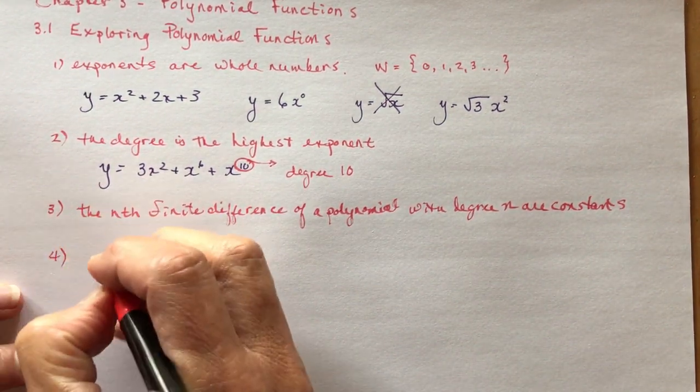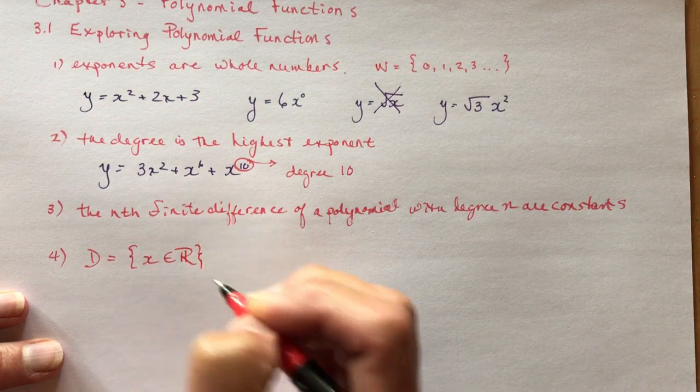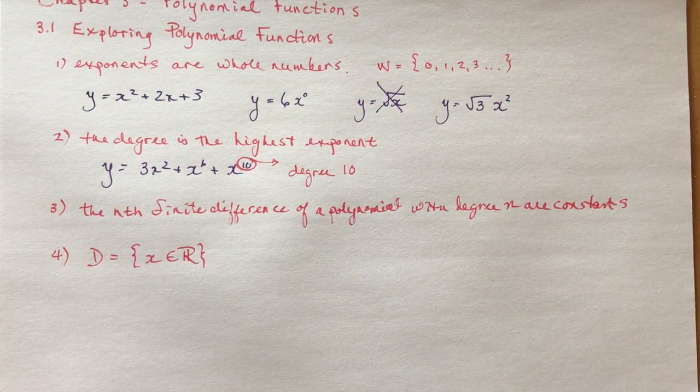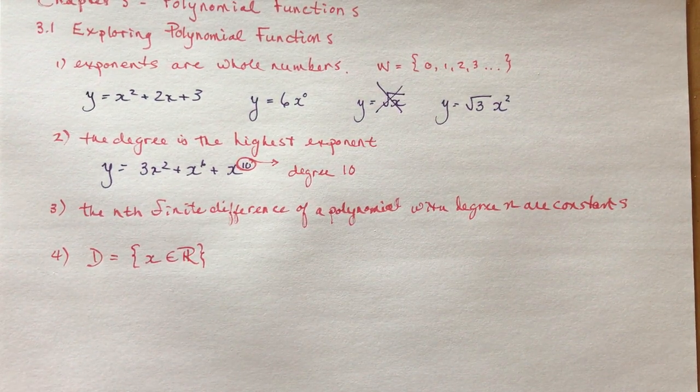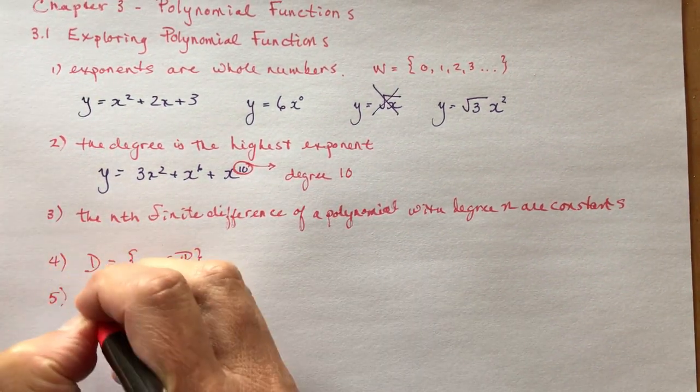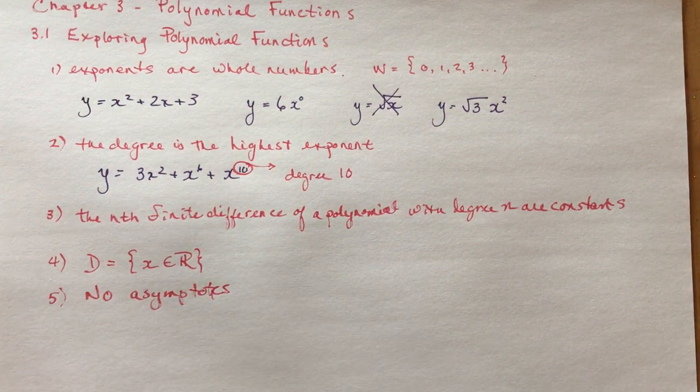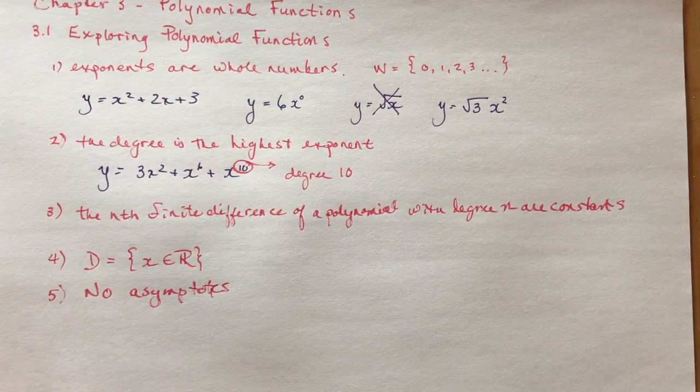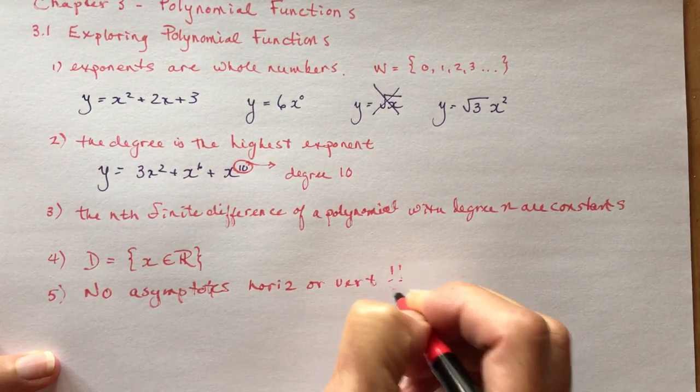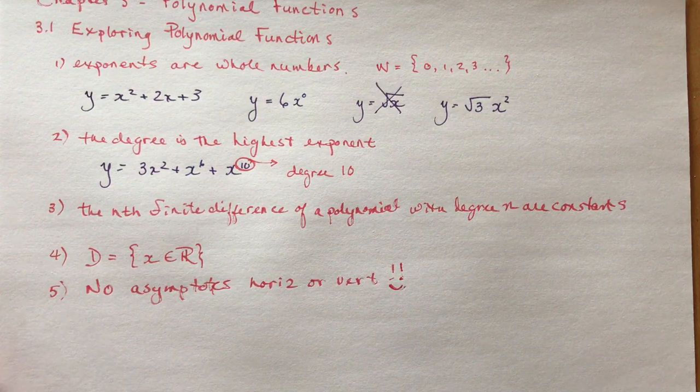The fourth thing you need to know is that the domain is x is an element of real numbers. What does that mean? It means that you can plug in anything, any value of x and get an answer for your function. There's no restrictions. That means there's no asymptotes. No horizontal or vertical asymptotes. That makes you really happy because asymptotes can be a little bit confusing.